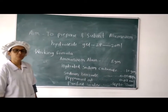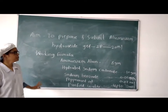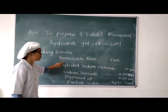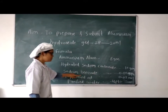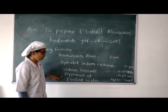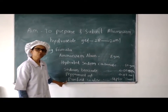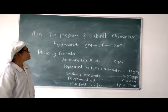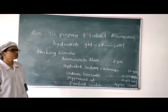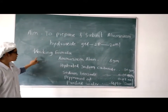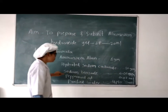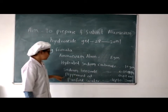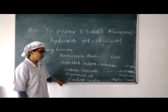Now we will see the actual demonstration of preparation of Aluminium Hydroxide Gel 20 ml. The formulation quantities used are: ammonium alum 8 g, hydrated sodium carbonate 10 g, sodium benzoate 0.02 g, and purified water up to 20 ml.